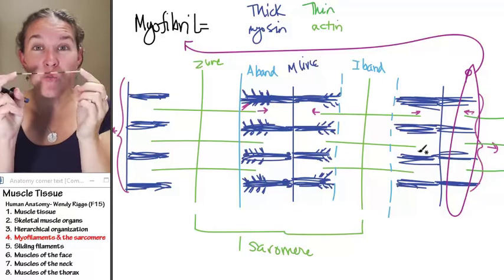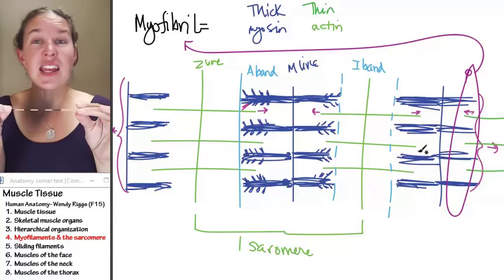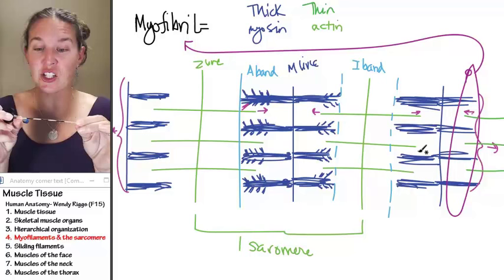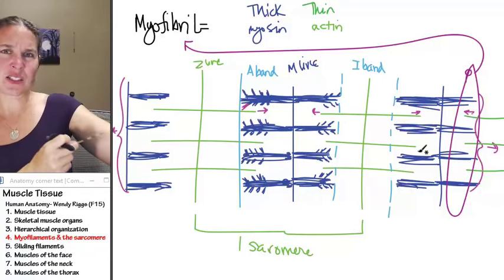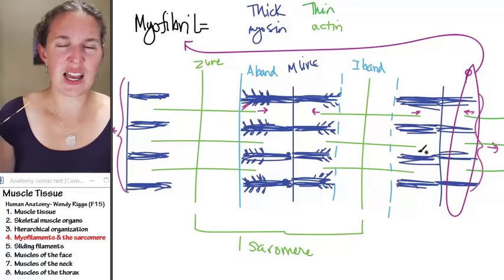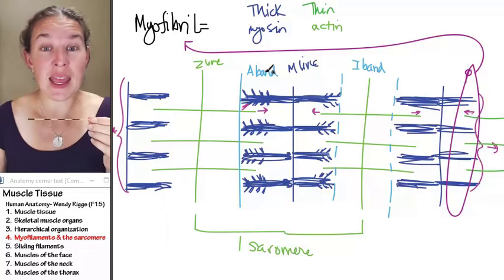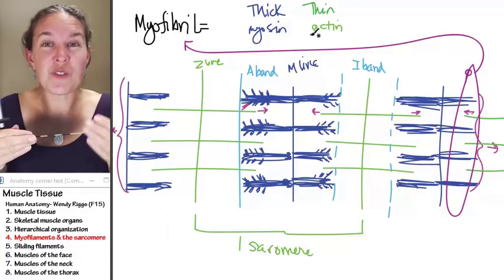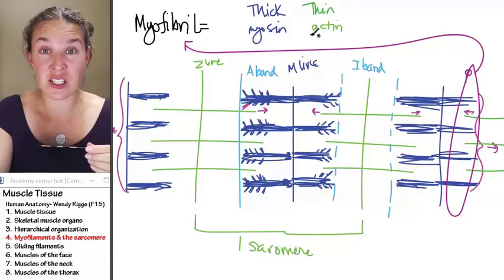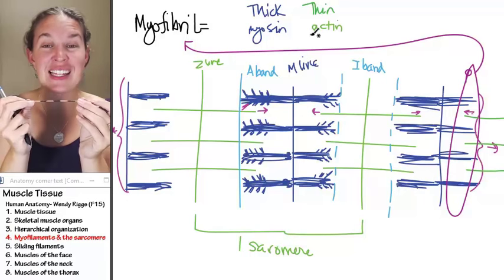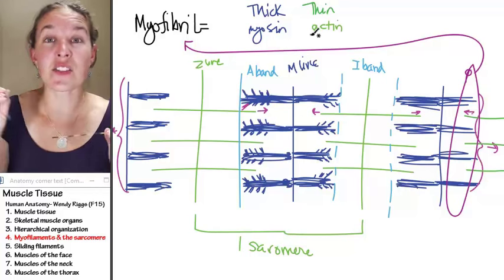Remember that the myofibril itself is like tons of sarcomeres end on end, attached for the whole length of a skeletal muscle organ. Myofibrils are made of myofilaments organized in a structure that creates a striated look. It's strings of sarcomeres.